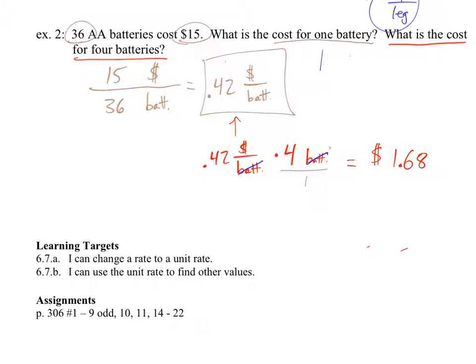So in other words, buying the batteries this way to put your batteries in your calculator, or whatever it would be, your Wii Fit would cost you $1.68 for the four new AA batteries. Questions? No. Good.